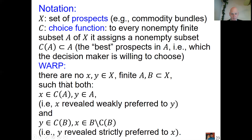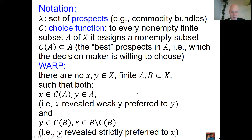WARP says it can never happen that both x is revealed weakly preferred to y and y is revealed strictly preferred to x. If this were to happen it would be a contradiction — here you think x is better than or equal to y, and there you think y is strictly better than x. The WARP axiom says such a contradiction should never happen. You've probably heard the WARP axiom in consumer demand theory; here we formulate it for finite sets, but it's the same idea.